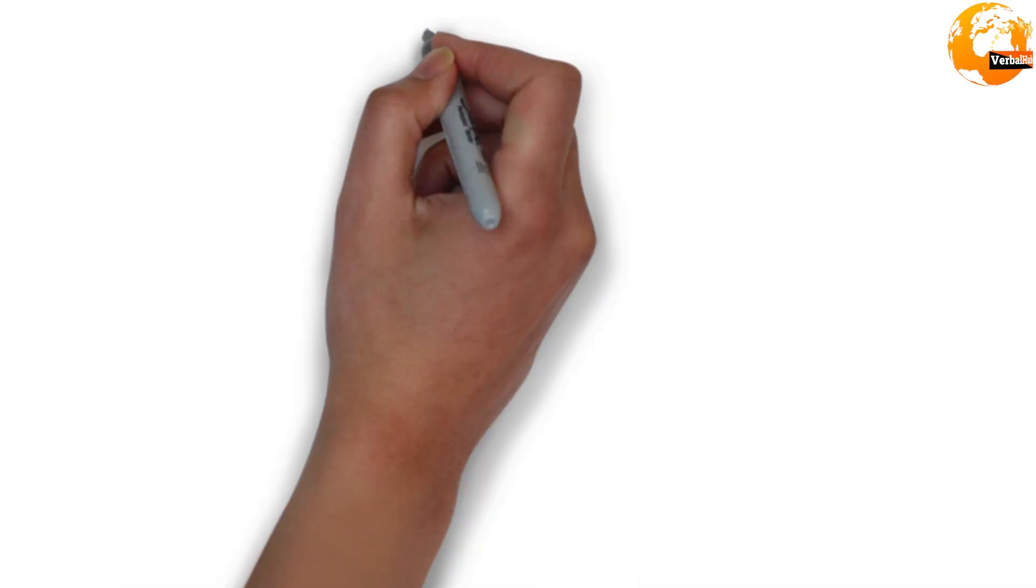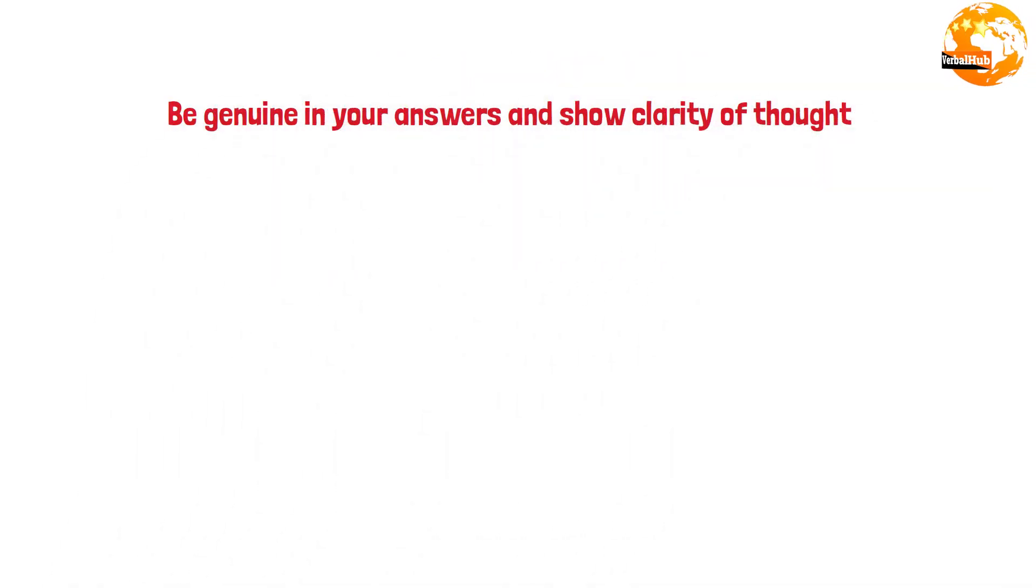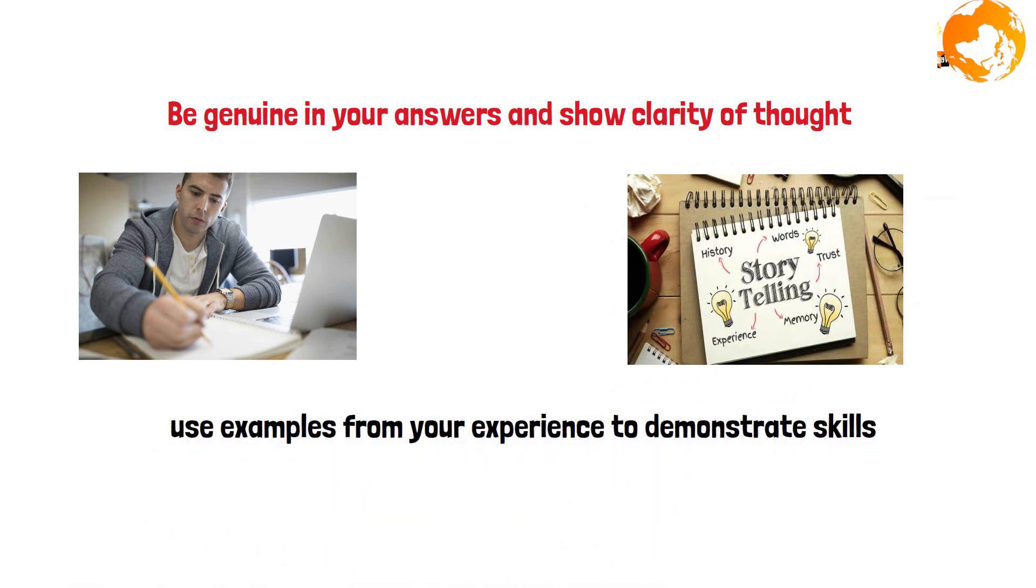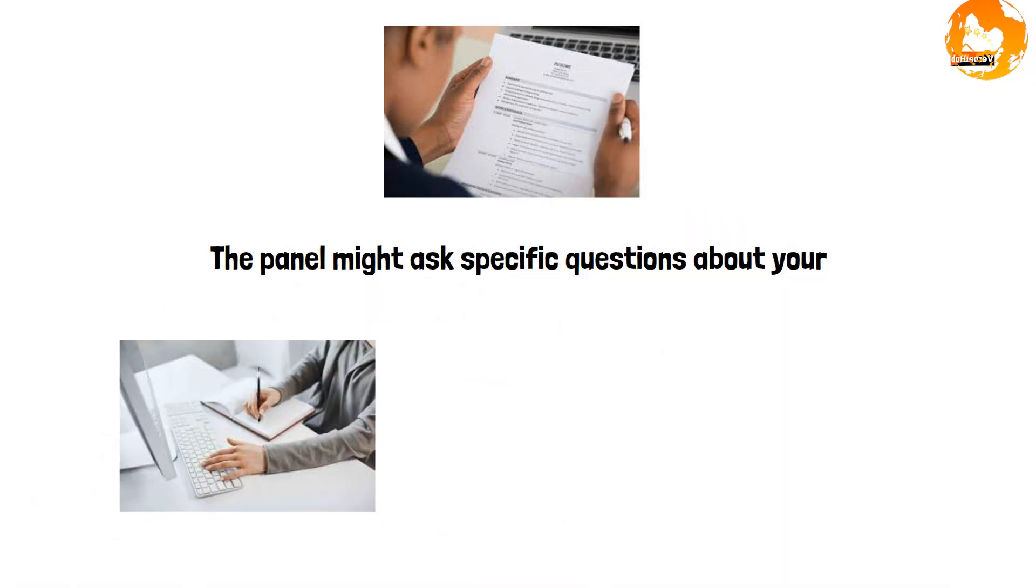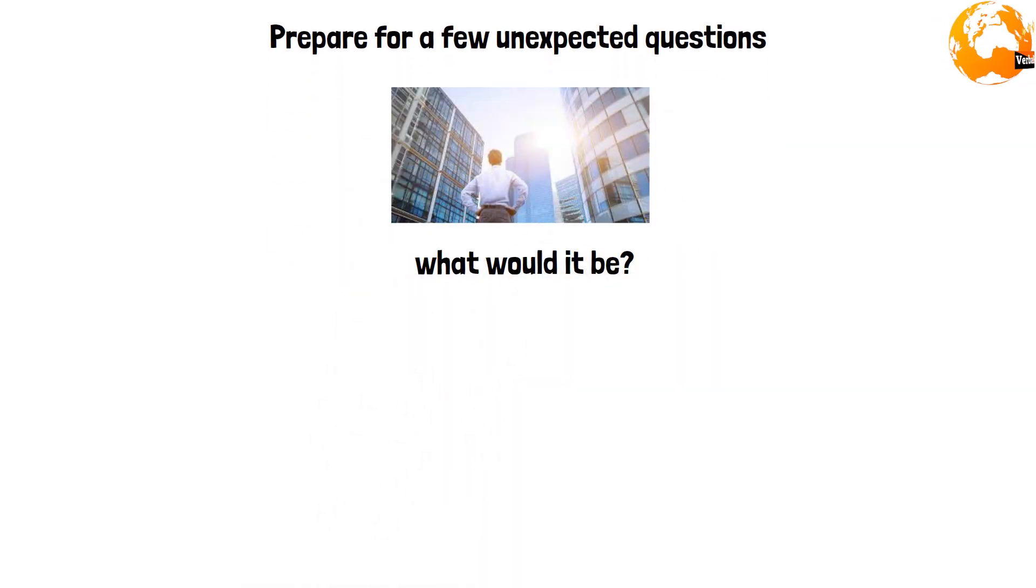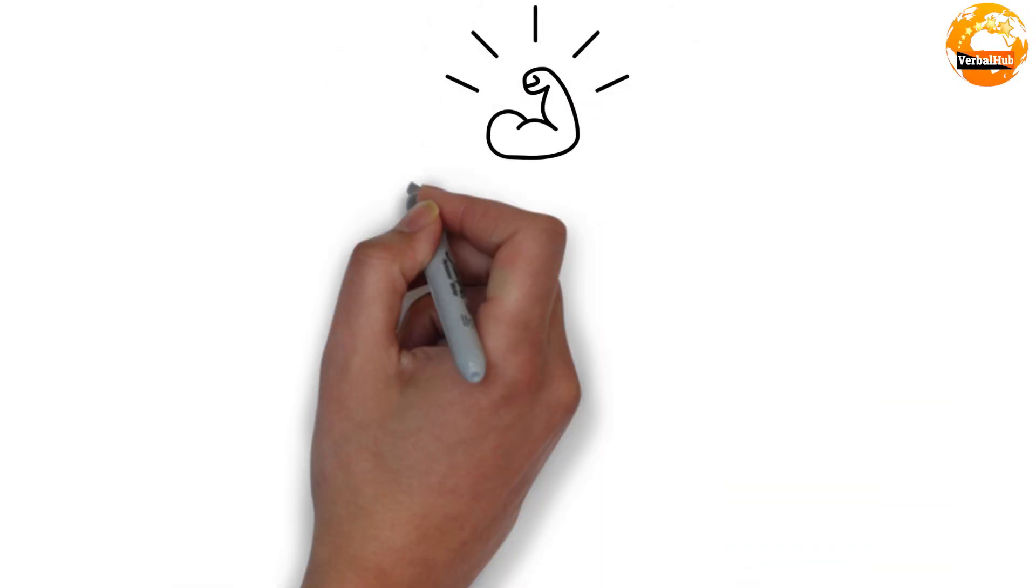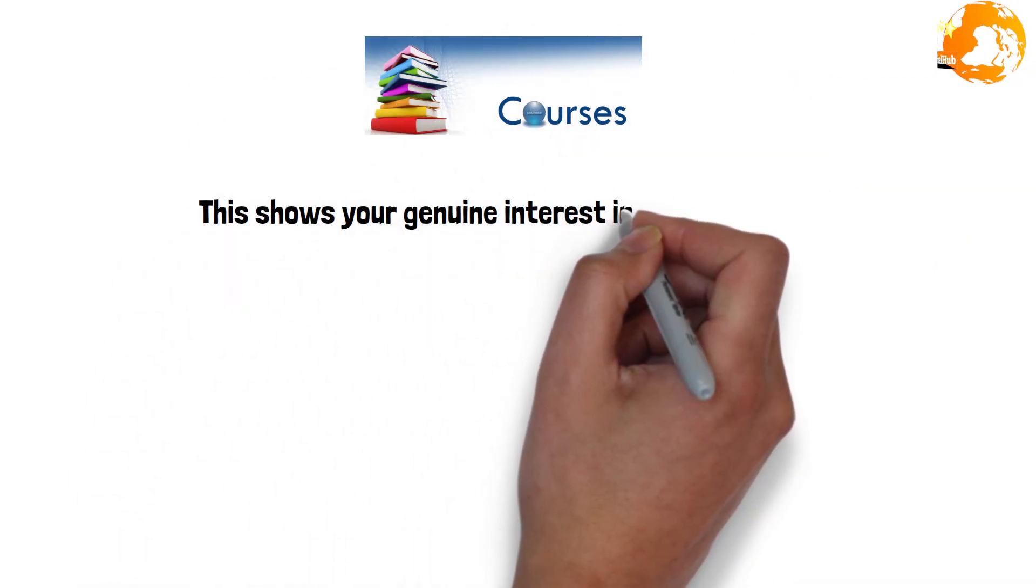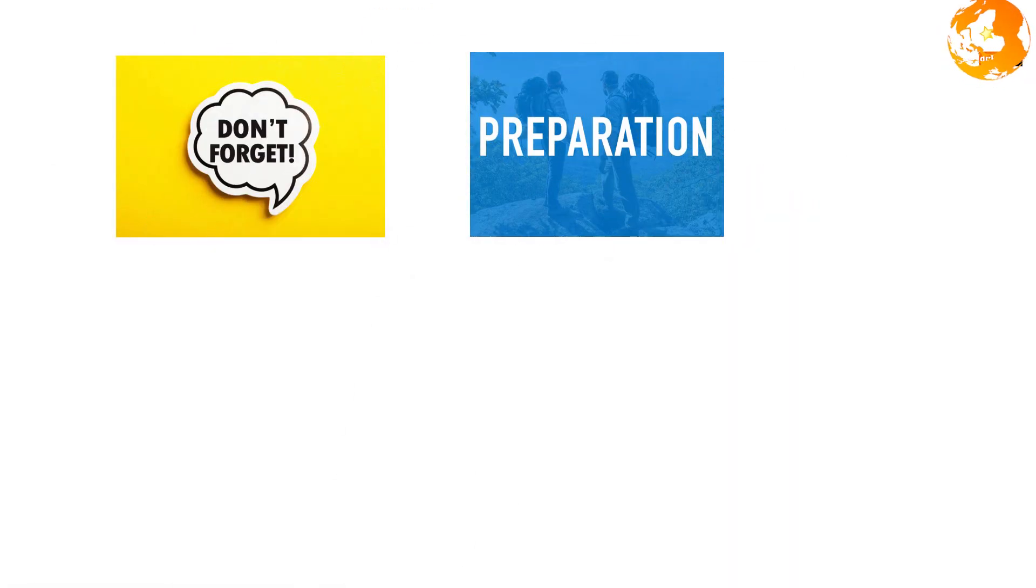Now for some final ISB PGP interview tips—what you need to remember: Be genuine in your answers and show clarity of thought. Practice storytelling; use examples from your experience to demonstrate skills. Know your resume inside out; the panel might ask specific questions about your work and experience. Prepare for a few unexpected questions, such as 'If you had to start your own company, what would it be?' Important point: End the interview on a strong note by asking thoughtful questions about the ISB community, alumni network, or specific courses. This shows your genuine interest in the program.